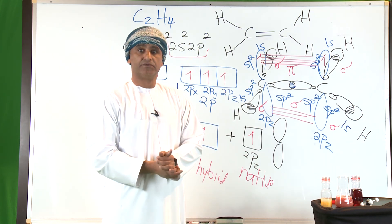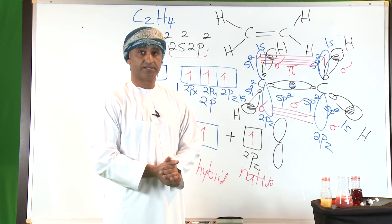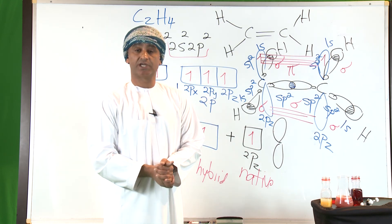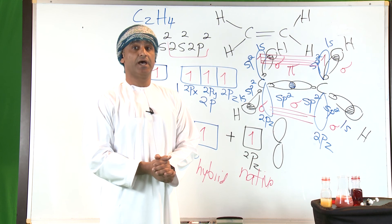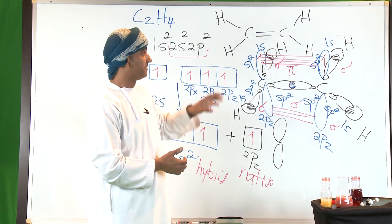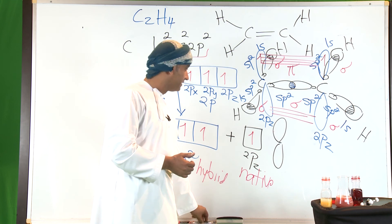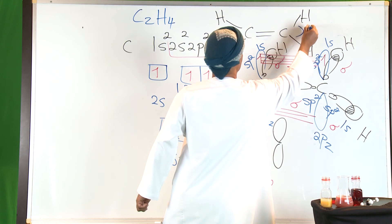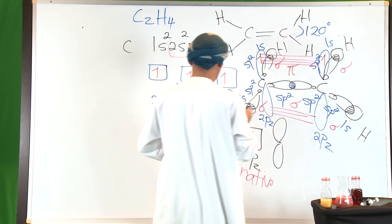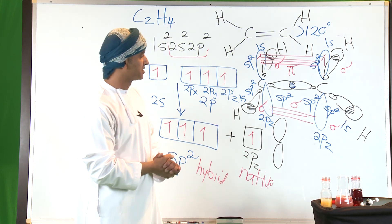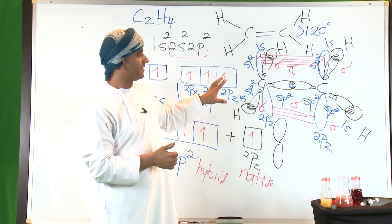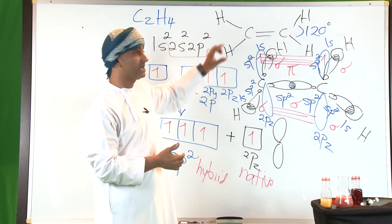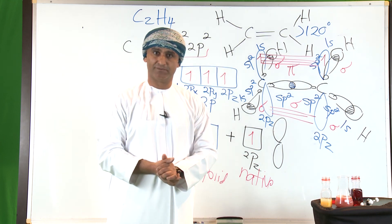In addition to the sigma bond formed by head-to-head overlap, this brings us to the conclusion that in each carbon-carbon double bond there is one sigma and one pi bond. The geometrical shape around carbon in ethylene is trigonal planar, with a bond angle of roughly 120°. In summary, there are four sigma bonds and one pi bond in ethylene, and the carbon-carbon double bond consists of one sigma and one pi.